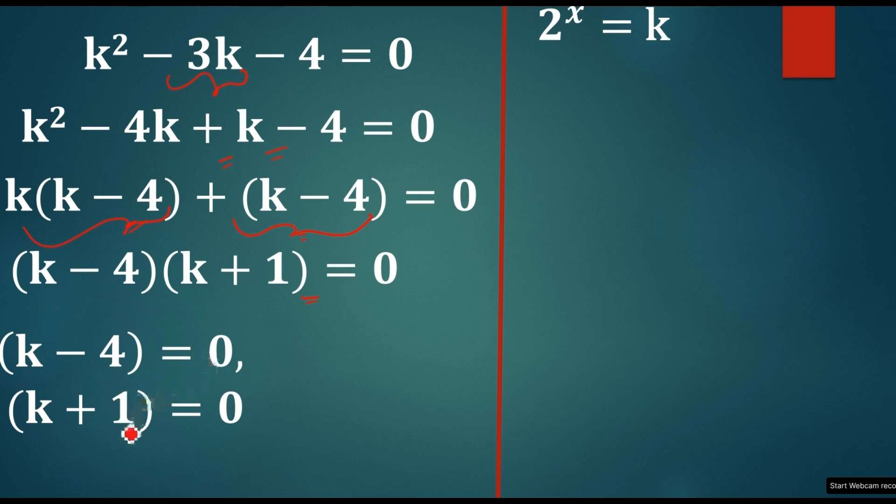So, k minus 4 is equal to 0 or it is k plus 1 is equal to 0 or both can be 0. That's how I write. So, we need to read this statement. Any multiplication we need to write like this. So, let's take the k now by equating these two equations to 0 we'll get k as 4 or minus 1.